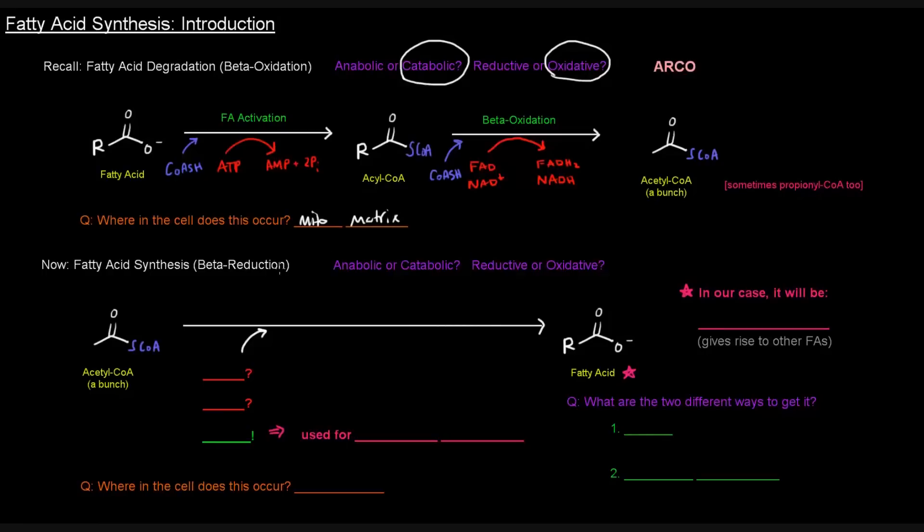Now what we're going to talk about is the opposite, which is fatty acid synthesis. Before we broke them down, now we're going to be making them. It's not actually called beta-reduction, but I like to call it beta-reduction because that's pretty much what it is. In beta-oxidation, we oxidize the beta-carbon of the molecule. In fatty acid synthesis, we're going to reduce the beta-carbon.